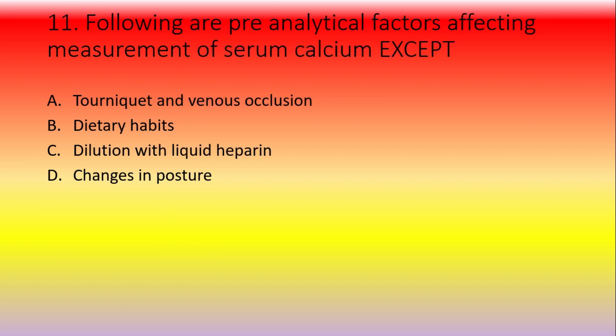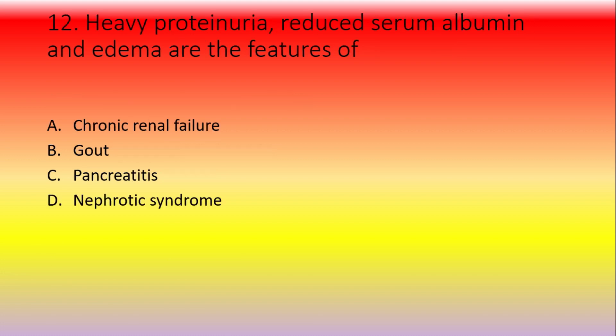Following are pre-analytical factors affecting the measurement of serum calcium EXCEPT — option A: tourniquet and venous occlusion, option B: dietary habits, option C: dilution with liquid heparin, option D: change in posture. The answer is dietary habits — it does not affect serum calcium very significantly.